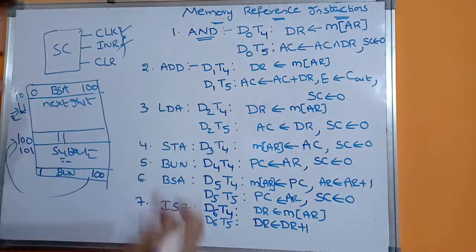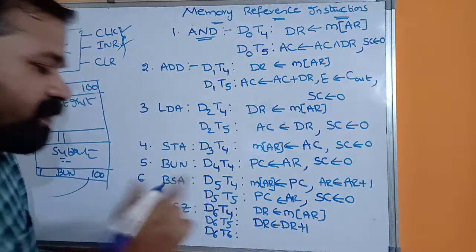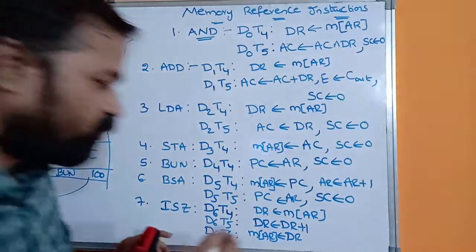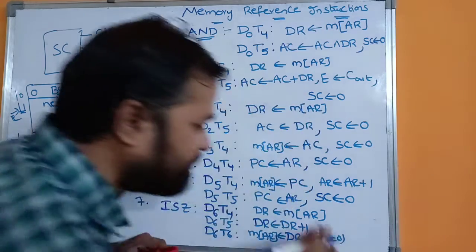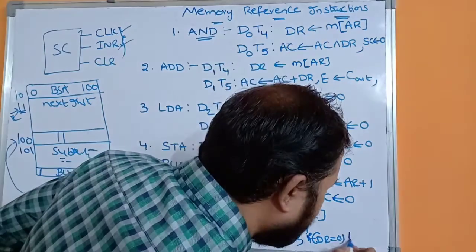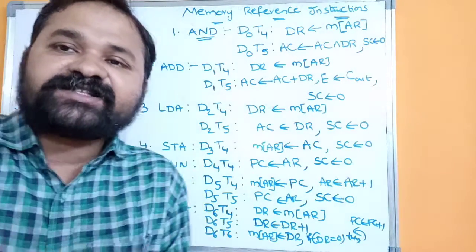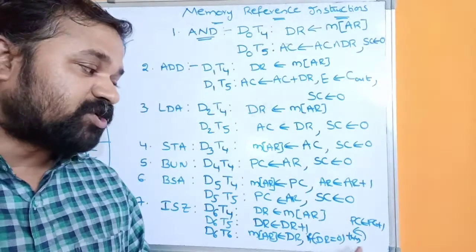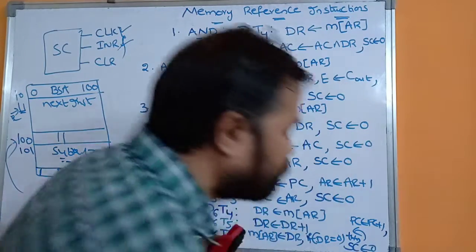After incrementing, with clock pulse and increment applied, the next timing signal becomes D6T6. At T6 we load the data register content back into memory — the memory content has now been incremented. Then we check: if DR equals zero, we skip the next instruction by incrementing the program counter. So if DR is zero after incrementation, increment the program counter to skip the next instruction, and clear SC to zero so the sequence counter resets.